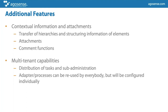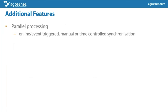With multi-tenant capabilities, you can distribute administration to sub-administrators, perhaps department-wise or depending on your internal organization. Synchronization processes can run in parallel — it's not limited to one at a time. This is how you can integrate several OEMs or suppliers and run processes simultaneously. They can be triggered by a change in the system, but most customers use time-controlled synchronization with a set schedule.